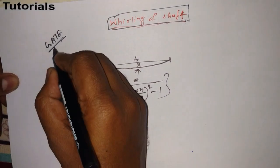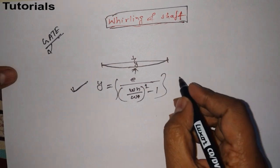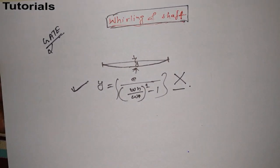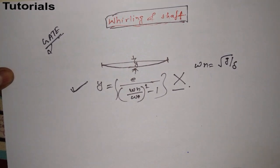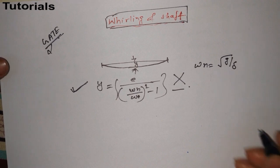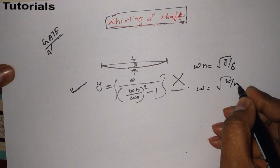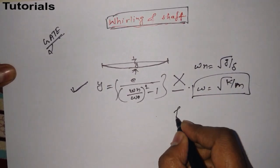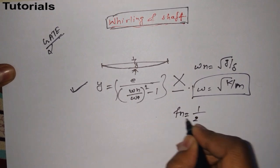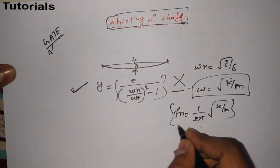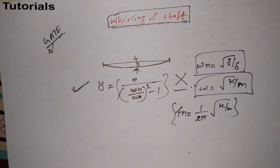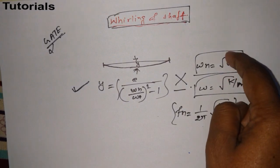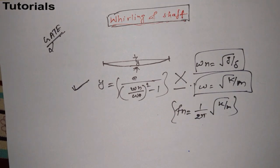The question from GATE which I am going to share uses a specific formula: ωn is equal to the square root of g divided by δ. In general, to find natural frequency we know ωn equals the square root of k/m. But for this GATE problem, only the formula ωn = √(g/δ) is needed.